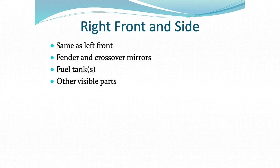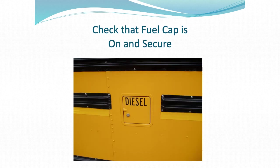The right side of the bus has some differences not found on the left side. For example, there is the fuel door. Open the fuel door and confirm that the fuel cap is secure. Check to confirm there are no fuel leaks and that the fuel door or fuel cage is not detached or hanging loose from the frame. Check underneath the bus to make sure the fuel tank is not leaking and is secure, and that the fuel cage around the fuel tank is secure as well.